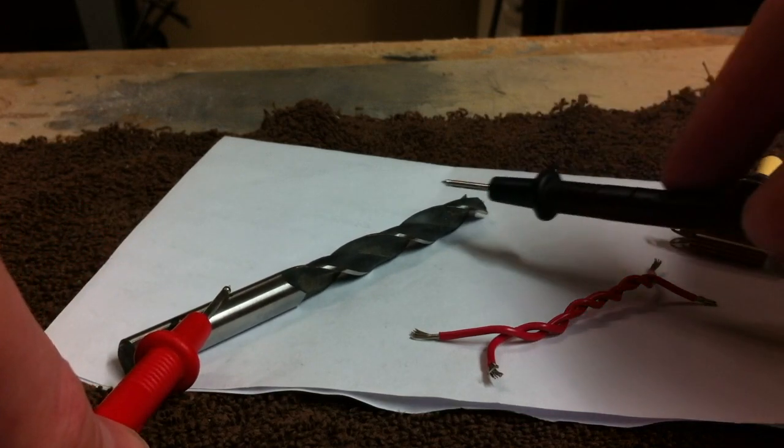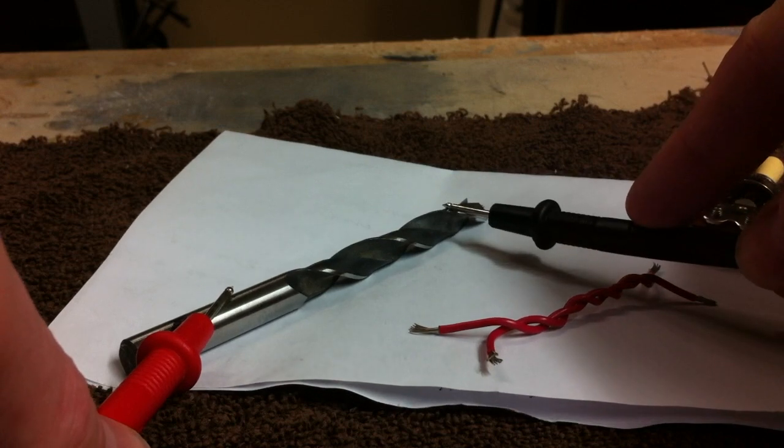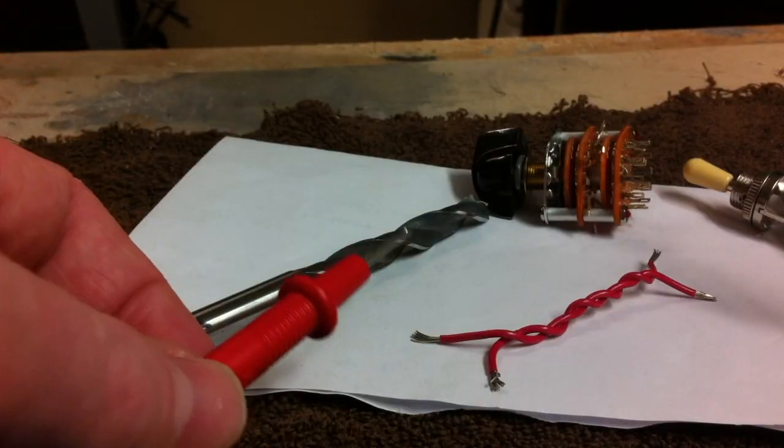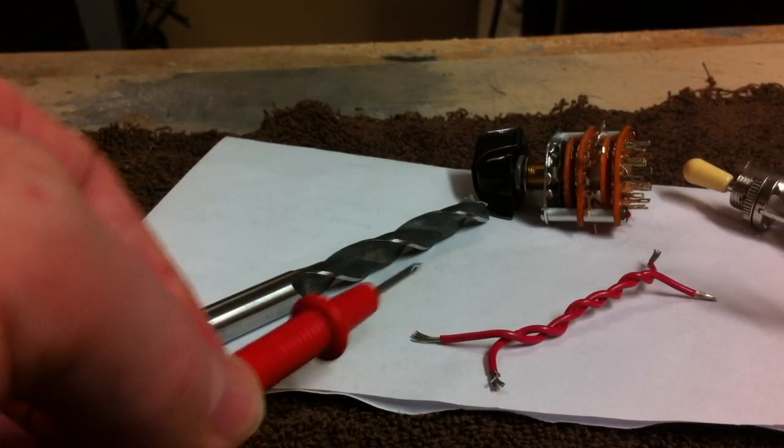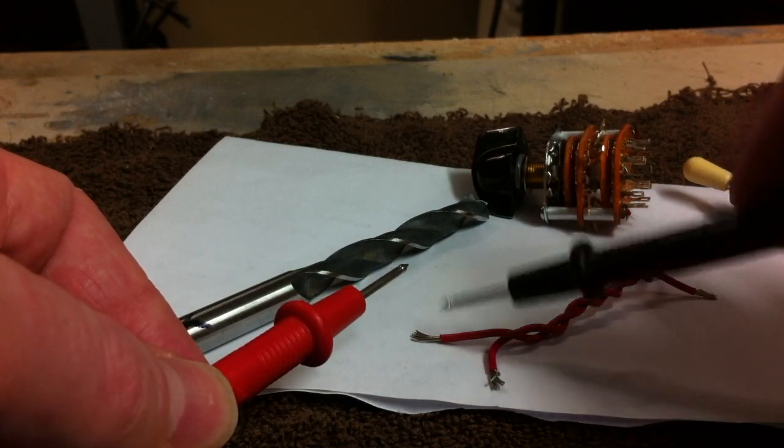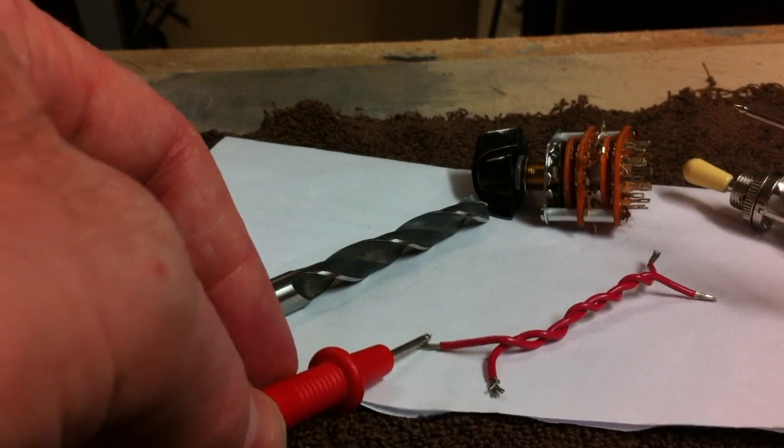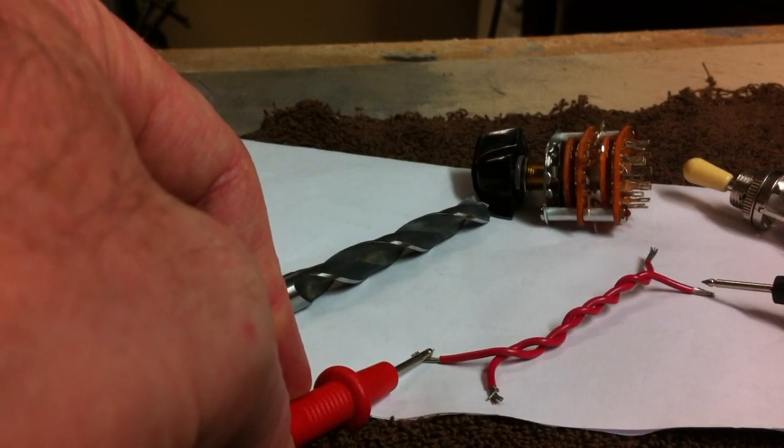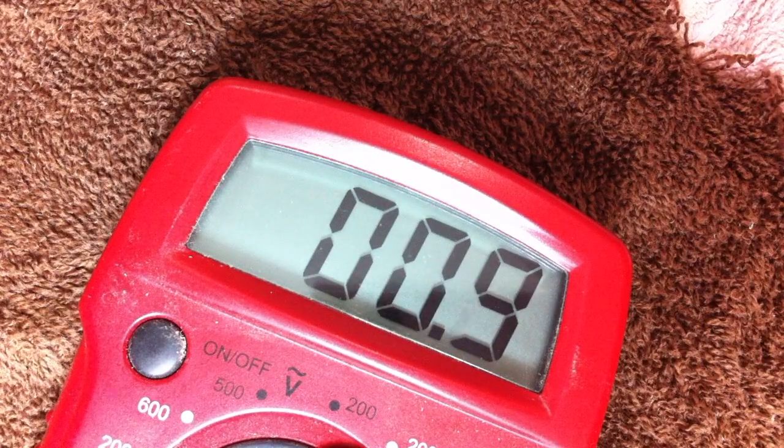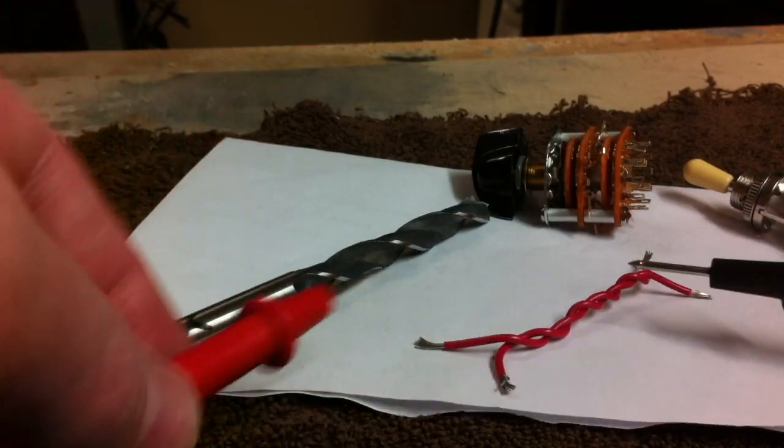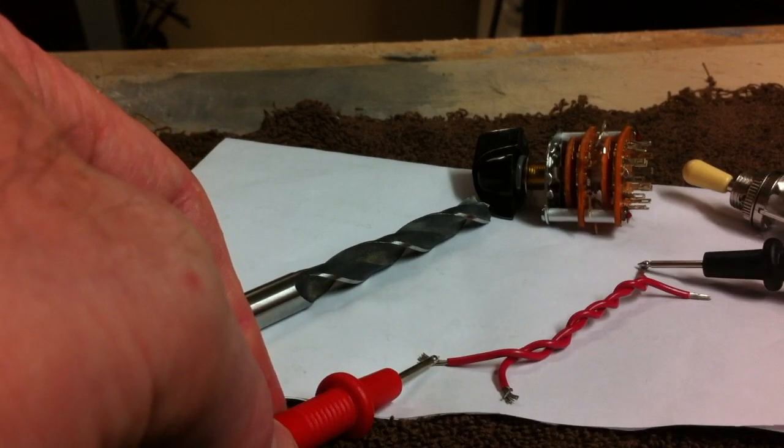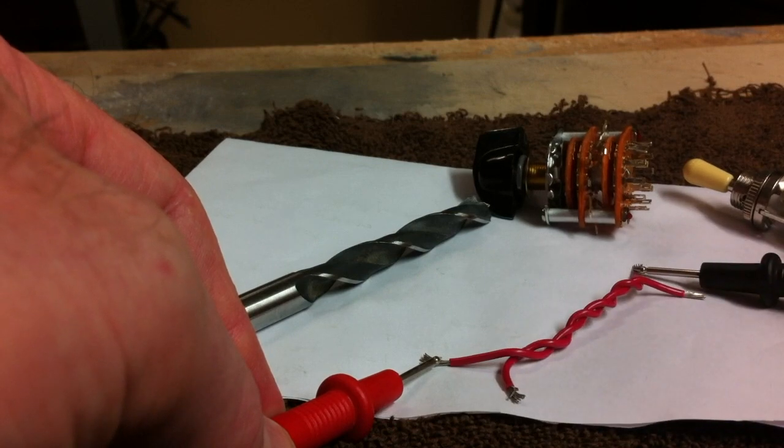If I put this probe over here and then this one on this side, I'm going to get a reading because current could go through it. Just like this twisted up piece of wire, it's impossible really to tell where the wire goes through this mess. So you would just touch on one side, touch on the other and there's no reading, and then you try the other one—obviously that's the one.